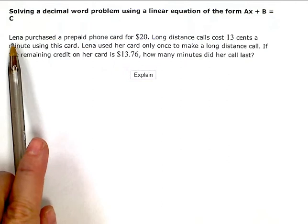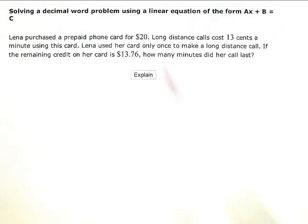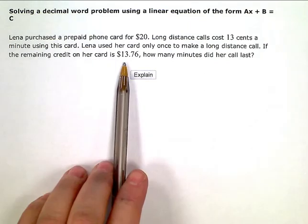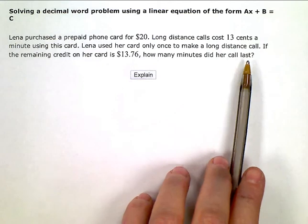Lena purchased a prepaid phone card for $20. Long-distance calls cost 13 cents a minute using this card. Lena used her card only once to make a long-distance call. If the remaining credit on her card is $13.76, how many minutes did her call last?